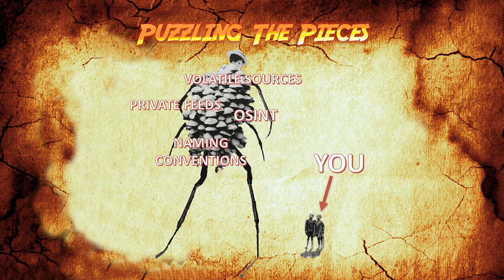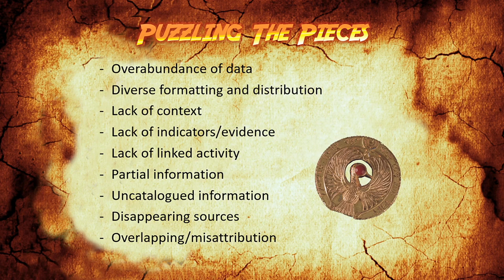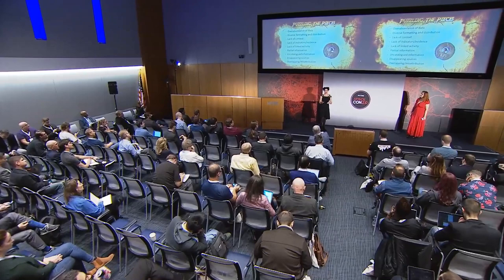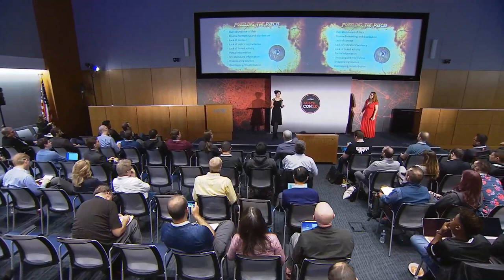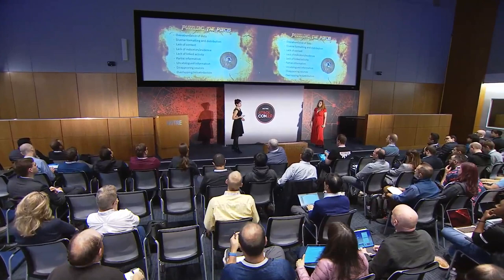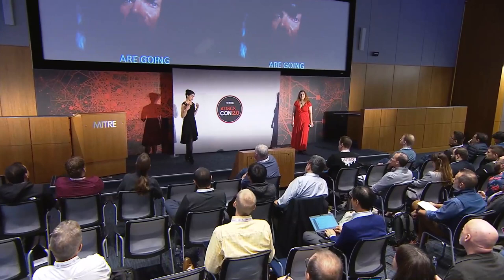When they started, they saw a huge monster composed of volatile sources, private feeds, open sources, naming conventions, and a lot of things that felt overwhelming. Some of the issues they came across — and are still struggling with — include diverse formatting and distribution of information. Even within one organization, formatting differs between reports, so you don't always find information in the same place. They also observed a lot of overlapping attributions they can't validate due to lack of context or indicators, making it difficult to assign a confidence level.